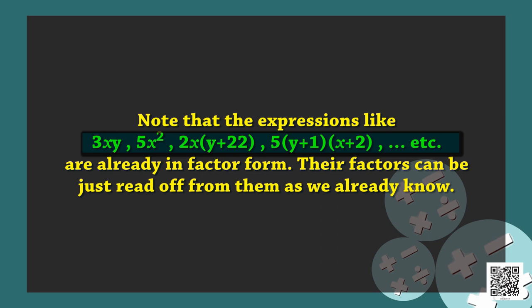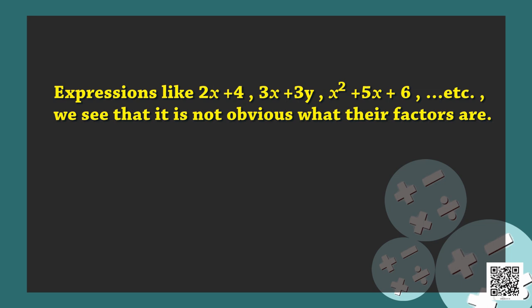Their factors can be just read off from them. On the other hand, expressions like 2x plus 4, 3x plus 3y, x square plus 5x plus 6, etc. — it is not obvious what their factors are. So we need to develop a systematic method to find the factorization of such algebraic expressions. Today, we are going to discuss several methods to see these things.